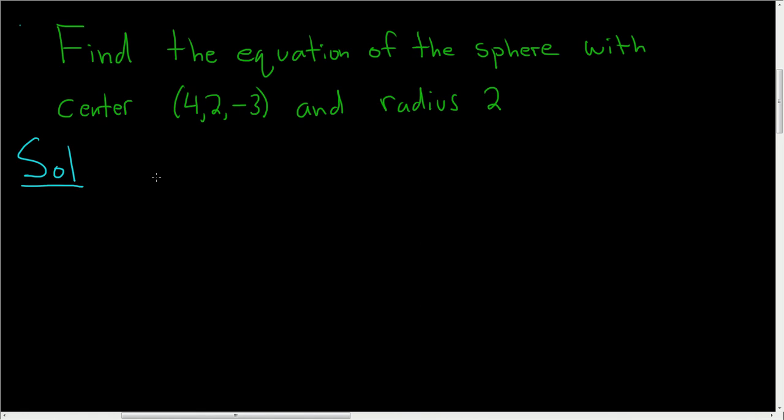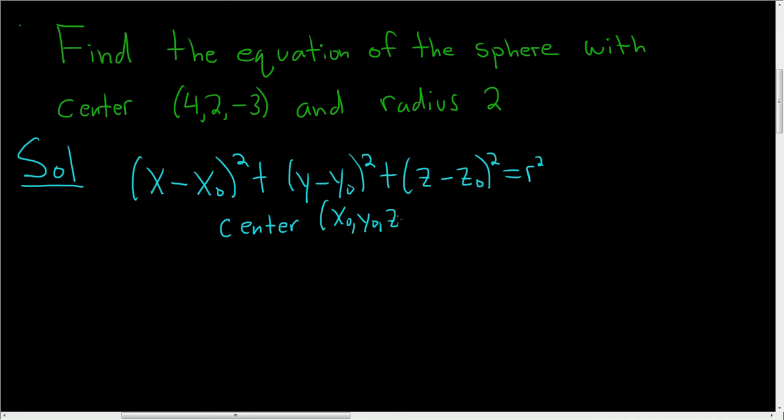The general formula for the equation of a sphere is (x - x₀)² + (y - y₀)² + (z - z₀)² = r². In this formula, the center is (x₀, y₀, z₀) and the radius is r.